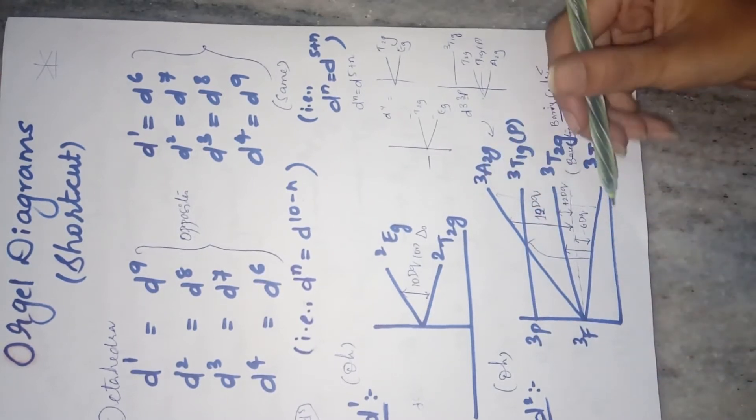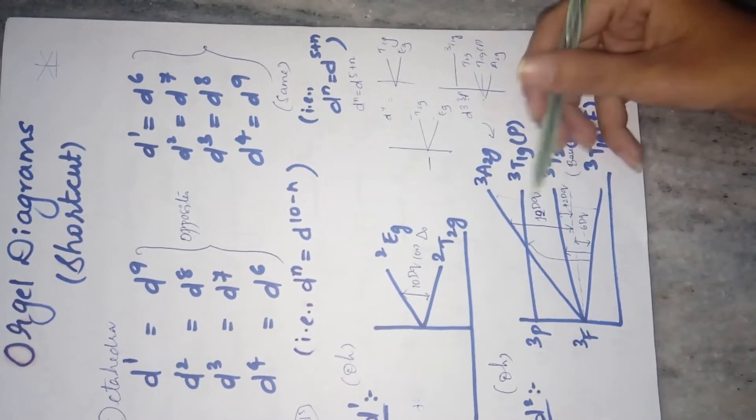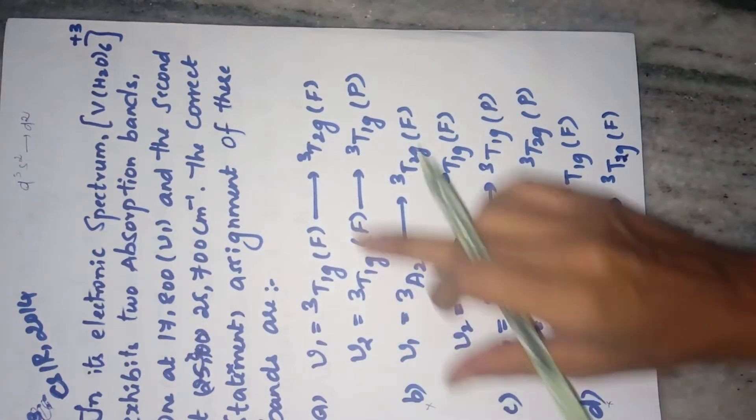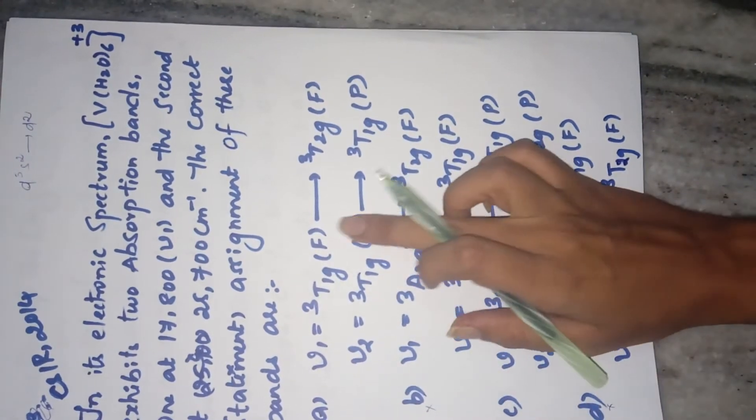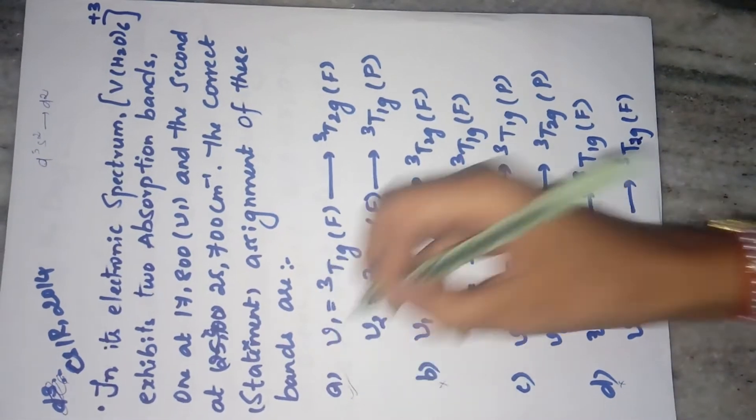The transition always starts from the ground state and it goes to the one where the same state is present but not the other states. So there are two possible transitions and whatever we are seeing over there, that matches with your option A. So directly you can tell that A is your right option.